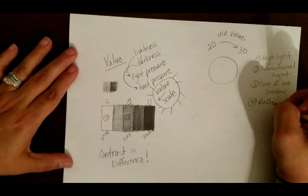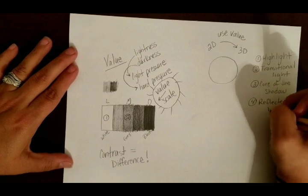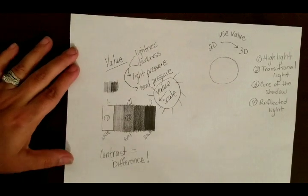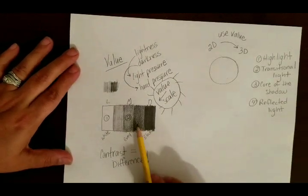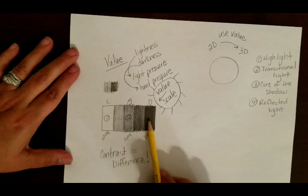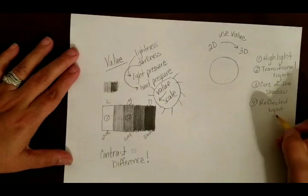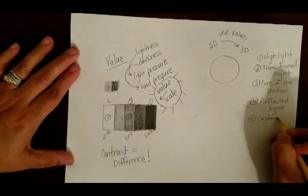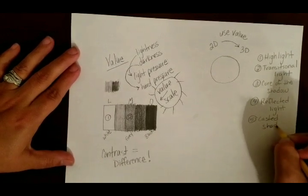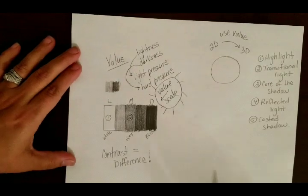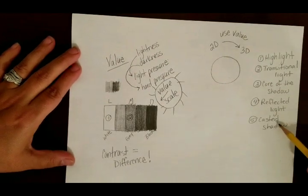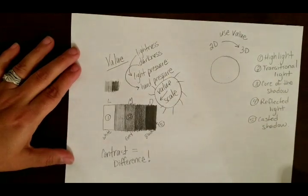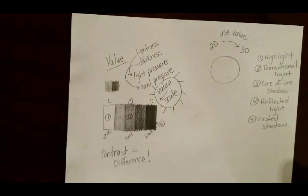The fourth type of light is an odd one that everyone usually forgets — it's called reflected light. The reflected light is basically the light that is reflecting off of the surface onto our object. It's not the darkest but it's not the lightest either — it's kind of an in-between. Then our very last type of light is the casted shadow, which is the shadow being cast from the object onto the surface, and on the value scale it's always going to be the darkest.